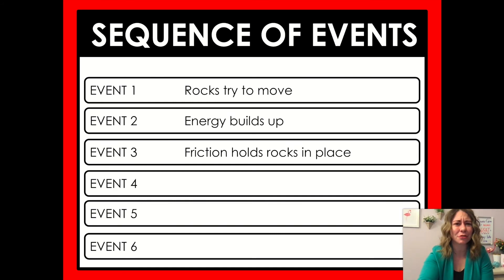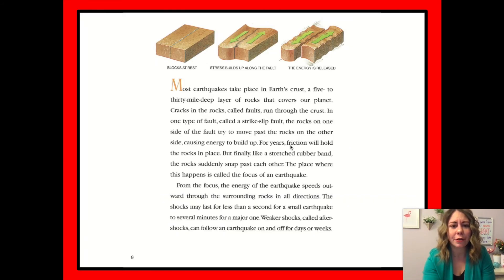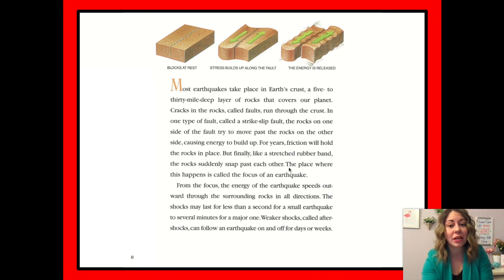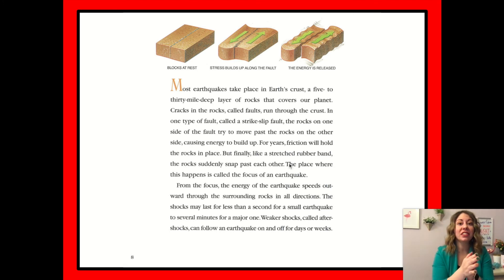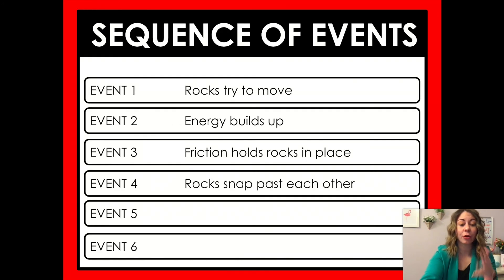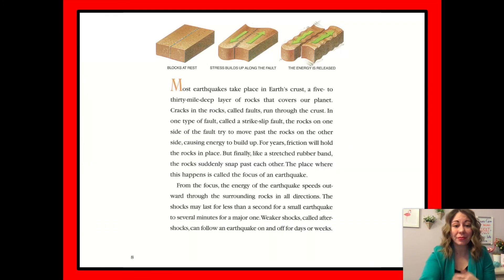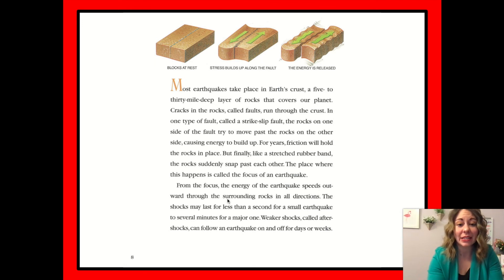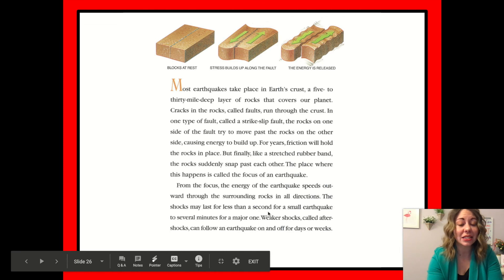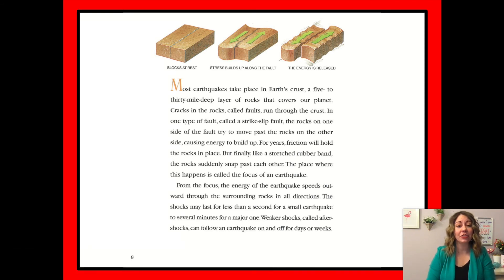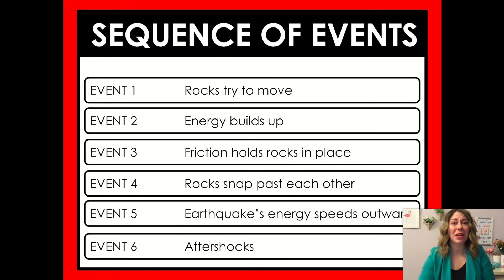So let's think about what happens next. 'For years, friction will hold the rocks in place. But finally, like a stretched rubber band, the rocks suddenly snap past each other. The place where this happens is called the focus of an earthquake.' So I added that as the fourth step — the rocks snap past each other. Then: 'From the focus, the energy of the earthquake speeds outward through the surrounding rocks in all directions. Weaker shocks, called aftershocks, can follow an earthquake on and off for days or weeks.' So what happens after the earthquake? Unfortunately, we have aftershocks — basically more earthquakes, just smaller in size.